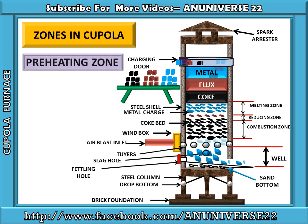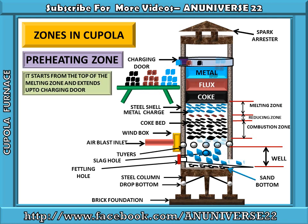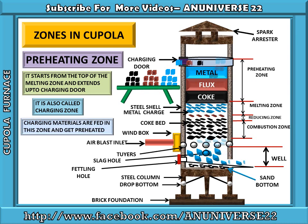Next zone is the preheating zone. As the name suggests, it starts from the top of the melting zone and extends up to the charging zone, and it is also called the charging zone. Charging materials are fed in this zone and get preheated — all the charging materials like metals, flux, and coke are supplied through this zone.